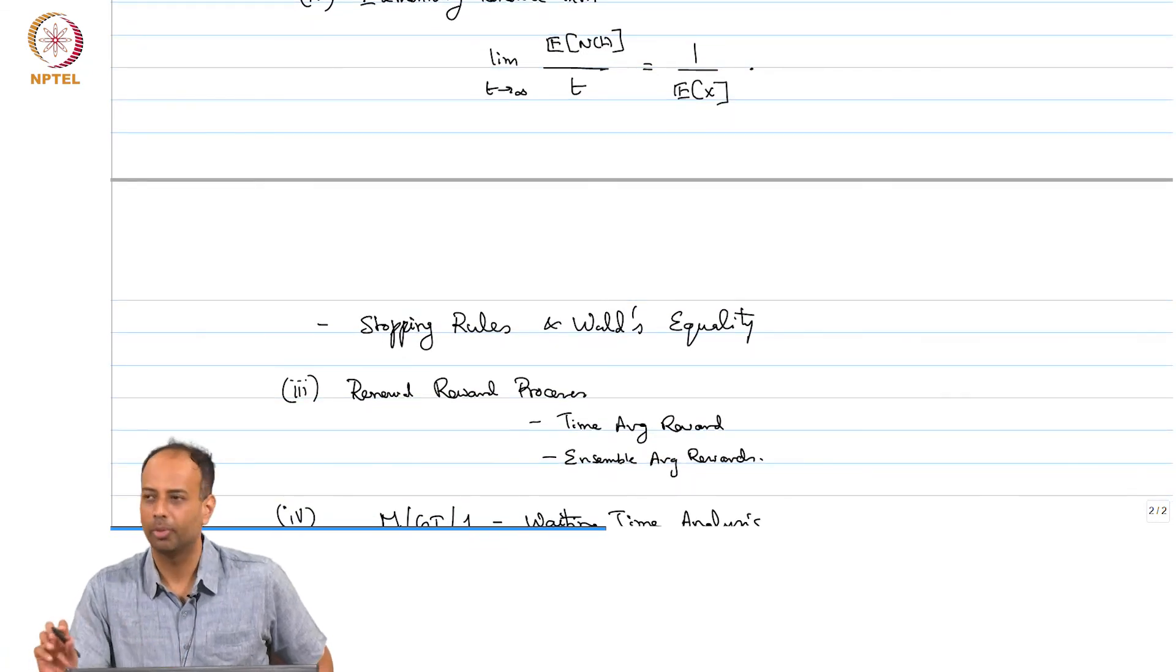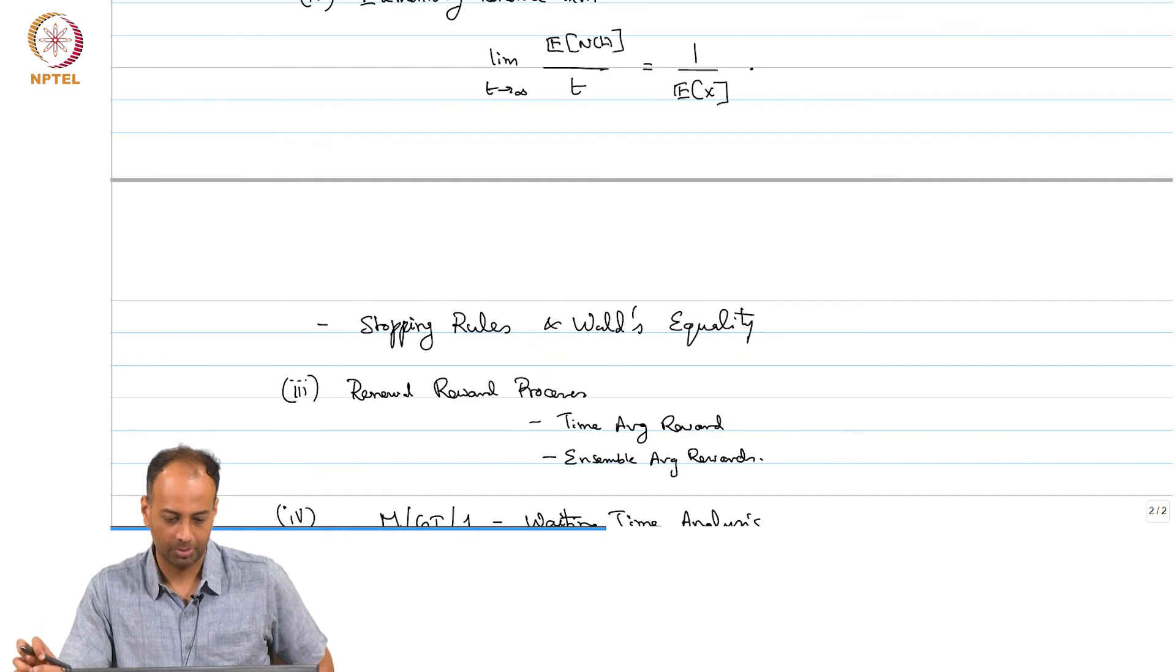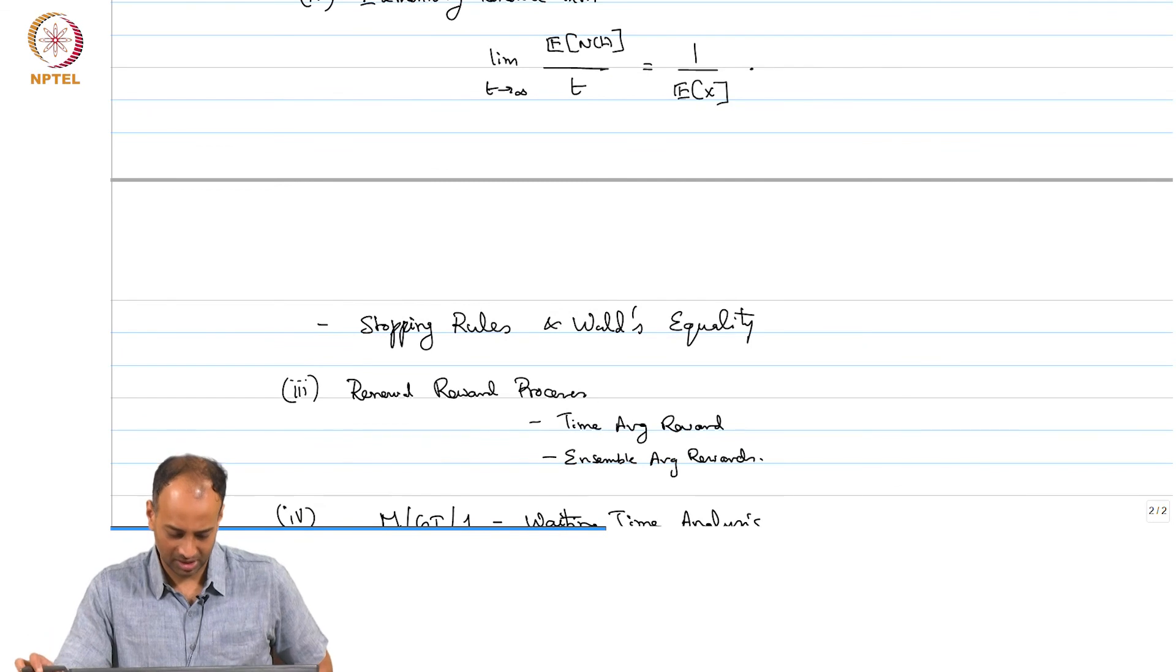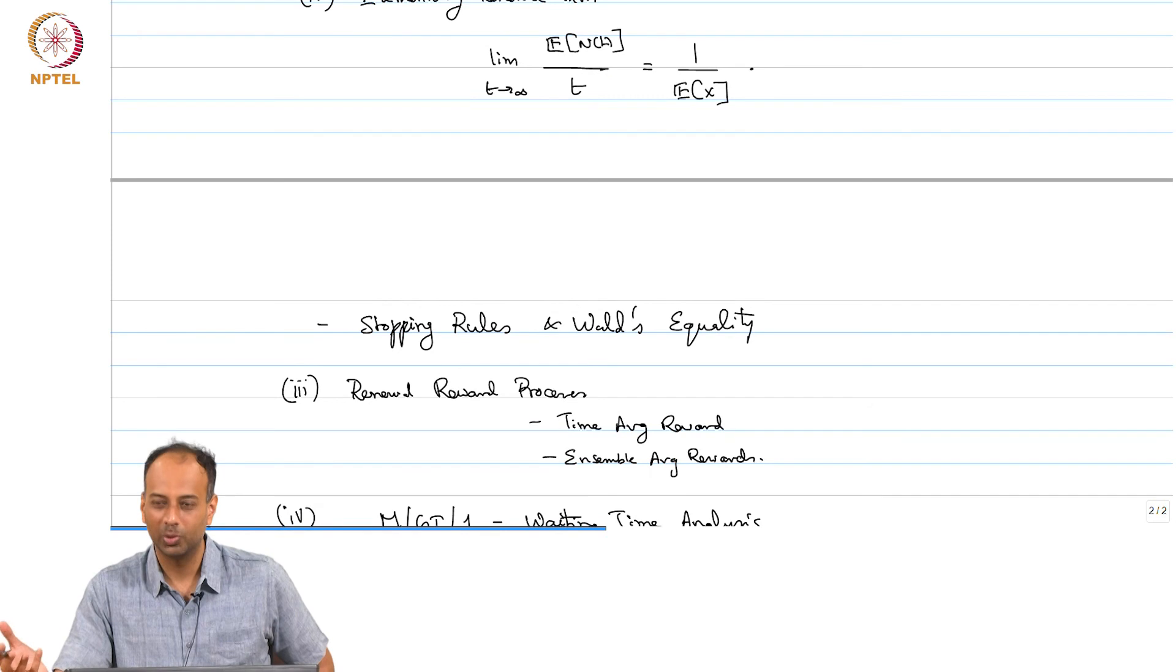Even the stopping rules are stopping times which we will discuss while proving the elementary renewal theorem. Stopping rules are random variables which have certain properties. We will ideally to define stopping rules properly, we need certain measure theoretic concepts. I will mention what they are, but we will stick to a definition which is easier to follow rather than give you the measure theoretic definition.